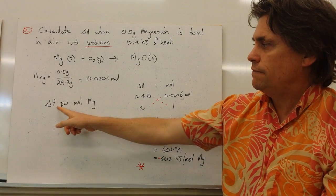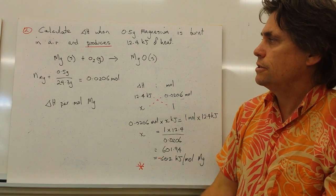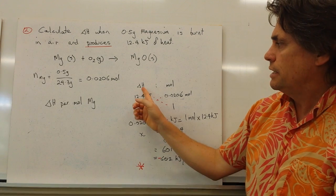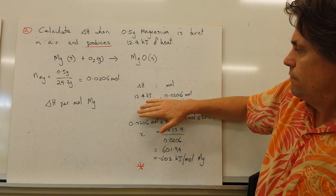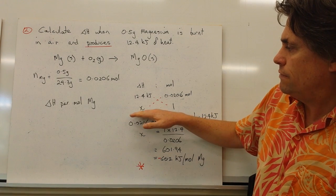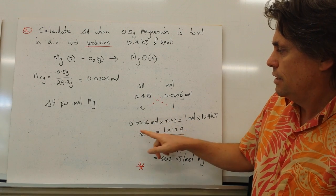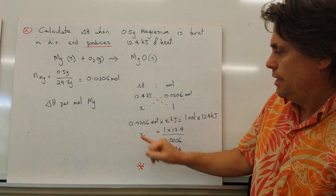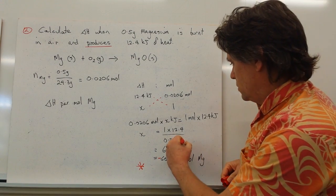Then the final step is to calculate our delta H value per mole, and we could do it either per mole of oxygen or per mole of magnesium. If we're talking about a combustion reaction, we usually do it in terms of what's being combusted. So we set up a simple ratio mechanism here. We've got our delta H value and the number of moles that we have. So we're given 12.4 kilojoules of heat for every 0.0206 moles of magnesium that are burnt. We want to know the delta H value, the change in enthalpy for one mole. So our unknown is X. If we cross multiply through these values, we get 0.0206 times X is equal to one mole times the 12.4. And if we rearrange for X and complete our calculation, we get a value of 601.94 kilojoules.